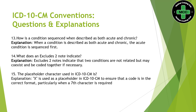How is a condition sequenced when described as both acute and chronic? When the same medical record has both acute and chronic conditions, we code both — but while sequencing, we sequence the acute condition as the primary diagnosis. What does an Excludes 2 note indicate? Excludes 2 indicates two conditions that are related, may co-exist, and can be coded together if necessary.